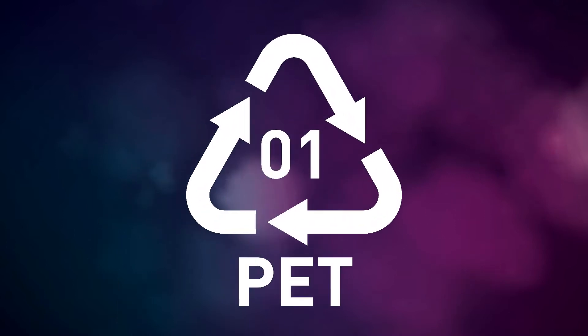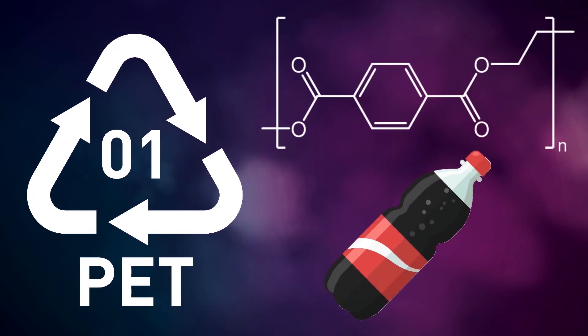First up is polyethylene terephthalate or PET. PET contains two monomeric units, ethylene glycol and terephthalic acid, that react together to form a strong plastic that is commonly used in food packaging and drinks bottles. It is one of the most commonly produced plastics and one of the most valuable for recycling.